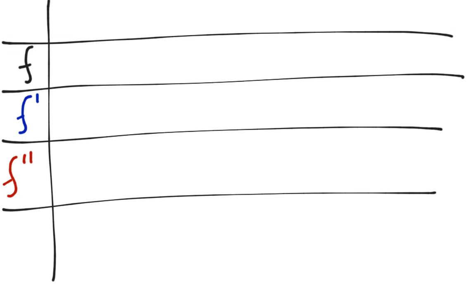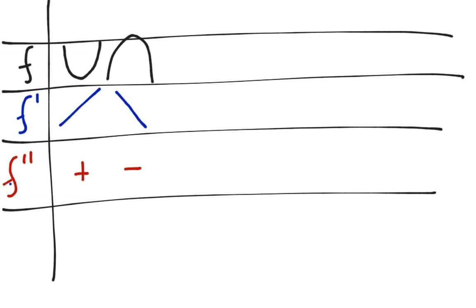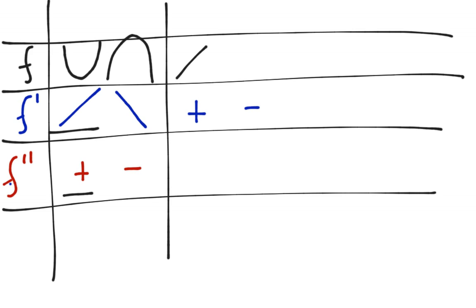The last thing I'll do is a quick chart to summarize all the properties and how they relate to each other. If f double prime is positive, that means f is concave up, and it also means f prime is increasing. If f double prime is negative, that means f prime is decreasing, which means f is concave down. All three of these are equivalent: f double prime is positive, f prime is increasing, and f is concave up. We also have that if f prime is positive then f is increasing, and if f prime is negative then f is decreasing.